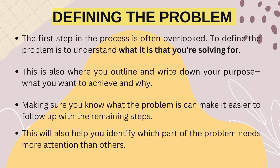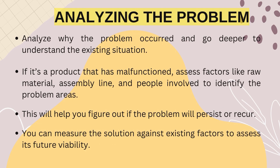After discussing these examples, let us review the steps. The first step is defining the problem: becoming aware of it — what is the problem you are trying to solve, what is the purpose, what you want to achieve and why. The second step is analyzing the problem: understand why the problem occurred and go deeper to understand the existing situation. If it is a product not functioning properly, assess factors like raw material, assembly line, and people involved to identify problem areas. This helps you figure out if the problem will persist or reoccur, and you can measure the solution against existing factors to assess its future viability.